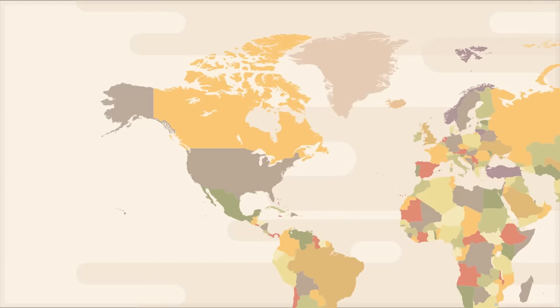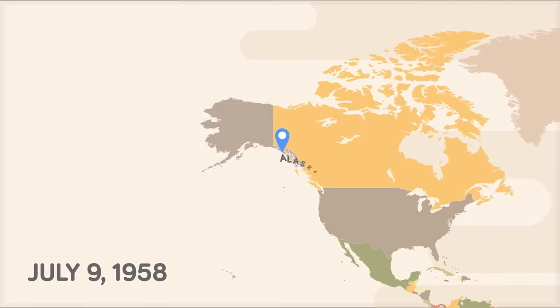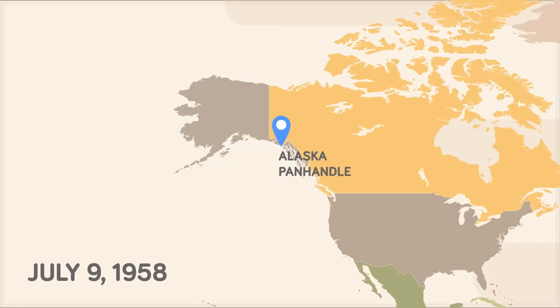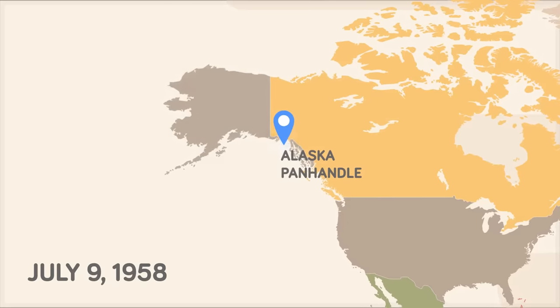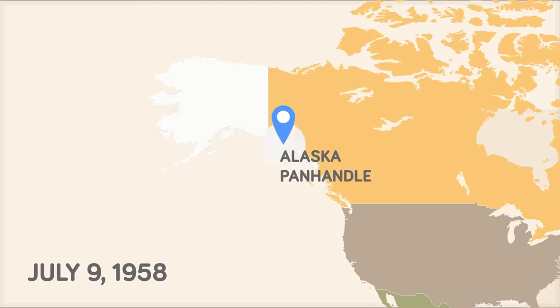It was July 9th, 1958, and an earthquake on the Fairweather Fault in the Alaska Panhandle rattled for about one minute. It was the strongest in Alaska for 60 years, and it could be felt as far away as Seattle.